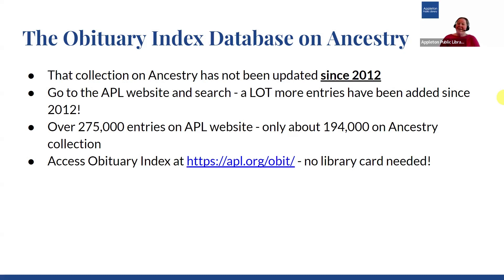I did want to let you know that the collection on Ancestry has not been updated since 2012, so you're definitely going to want to go to our APL website and use that obituary index directly, because a lot more entries have been added since 2012. For example, we have over 275,000 entries on our APL website, whereas on the Ancestry collection they only have about 194,000 — so you're missing a lot of entries if you're just searching within that Ancestry collection. Access our obituary index at apl.org. You don't need a library card to access it, and hopefully you'll have luck finding your ancestors.